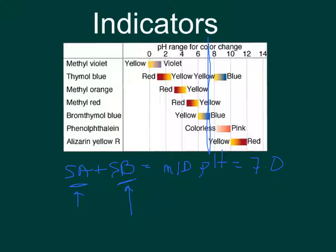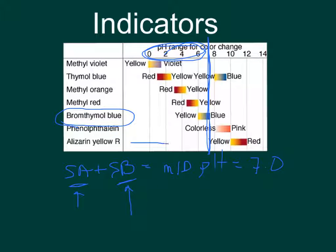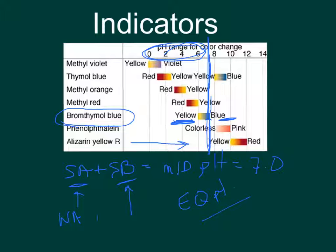I want an indicator that's going to change color around seven, which means I could use bromothymol blue. If I start with my unknown acid where my pH probe is reading, then as I add base the pH is going to increase. I want something that is yellow when it's acidic and blue when it's basic - when it's right at seven and just starts to change, I know I'm close to my equivalence point. If using a weak acid and a strong base, then I know my equivalence point pH is going to be somewhere higher up.